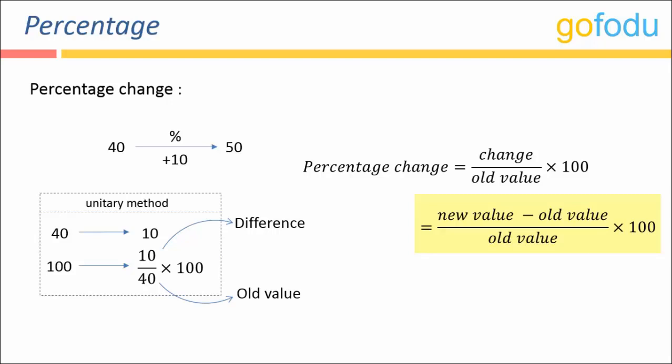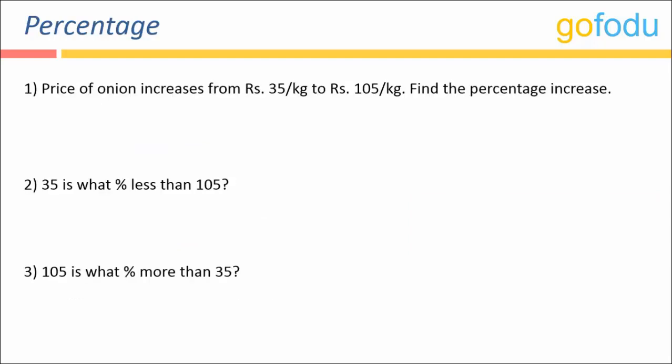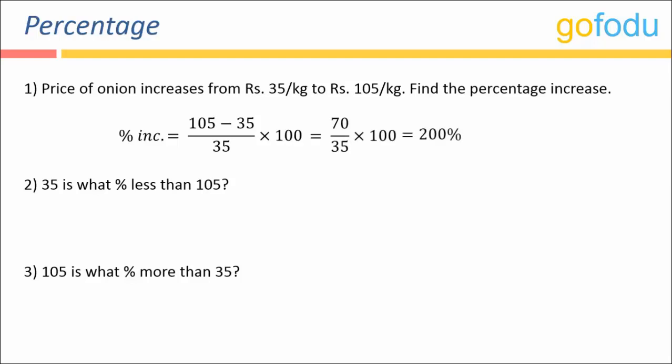Price of onion increases from thirty-five rupees per kg to hundred and five rupees per kg. Applying the formula: hundred and five minus thirty-five, upon thirty-five, into hundred. That is seventy upon thirty-five into hundred, which comes out to be two hundred percent. So there was an increase of two hundred percent in the price.